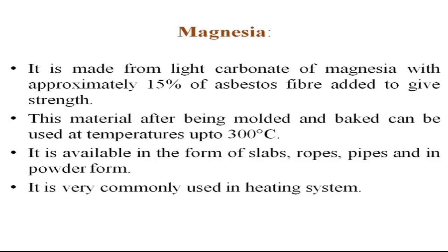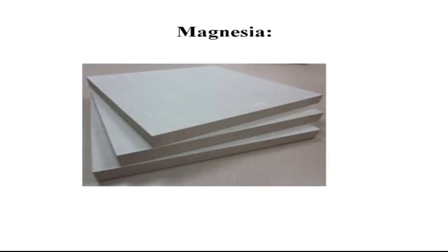Magnesia is made from light carbonate of magnesia with approximately 15% asbestos fibers added to give strength, since magnesia itself is a powder with no structural strength. After being molded and baked, it can be used at temperatures up to 300°C as it has nothing that burns at that temperature. It is available in the form of slabs, ropes, pipes, and powder form, and is very commonly used in heating systems.